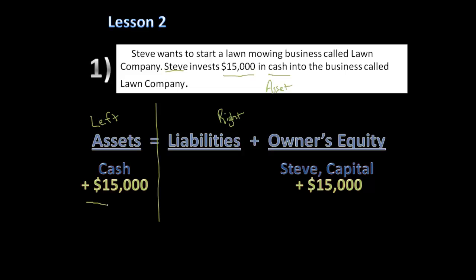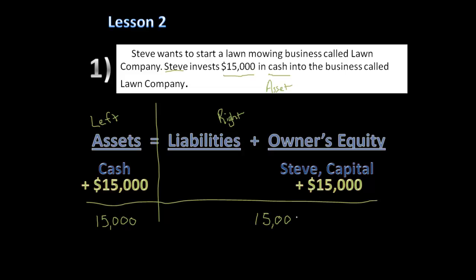Let's make sure the equation balances. On the left side we have $15,000, and on the right side we also have $15,000. Since $15,000 equals $15,000, our equation is balanced and we can move on.